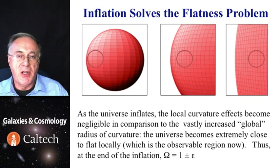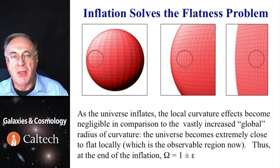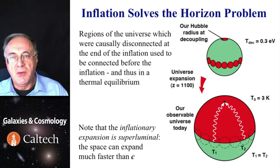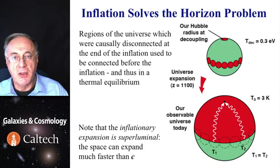So the density parameter differs from unity by an epsilon, a very tiny number. At the same time, this solves the horizon problem. Space can expand faster than the speed of light, so the regions that were causally disjoint at the time of recombination might have been spatially close to each other at the beginning of inflation.